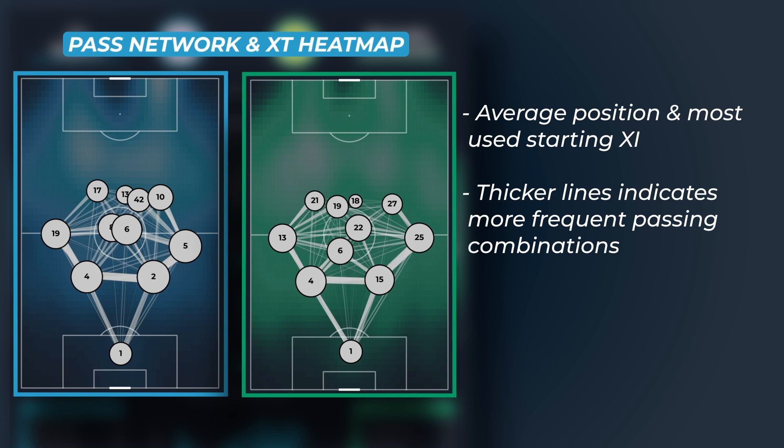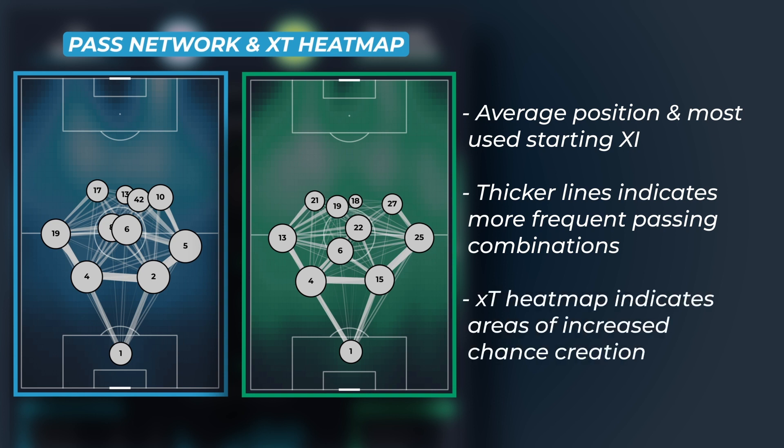Underlying the pass network, we have a team's expected threat heatmap, giving us a visual representation of where a team creates the most opportunities. The brighter the region, the more chances were created from that area.